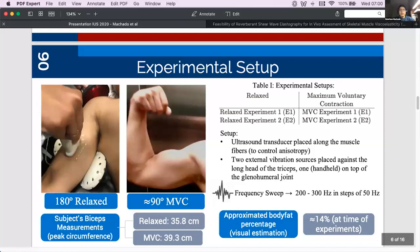So let's take a look at the experimental setup. So four experiments were performed on the biceps brachii of a healthy male 19-year-old volunteer that presents low body fat levels and high muscle vascular development. The ultrasound probe was placed along the direction of the fibers to control anisotropy and three external vibration sources were used to try to generate a reverberant shear wave field as shown in the figure. The vibration frequency range for the experiments was 200 to 300 hertz in steps of 50 hertz and half of the experiments were performed in a relaxed state while the other half were performed in maximum voluntary contraction or MVC for short.